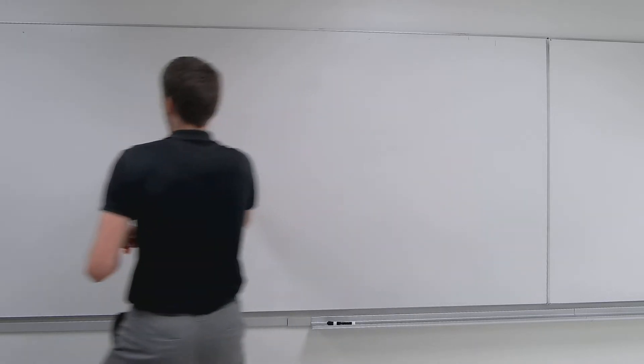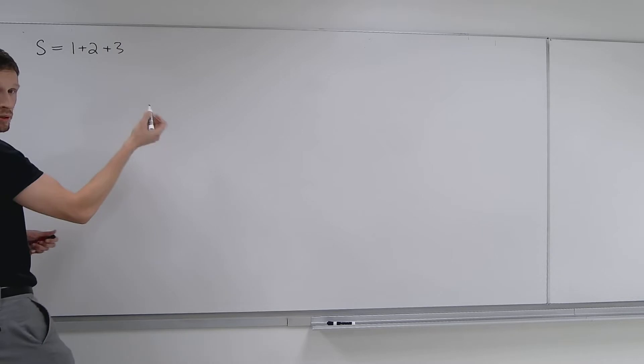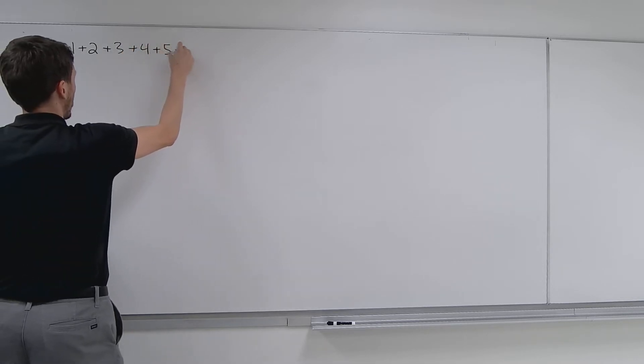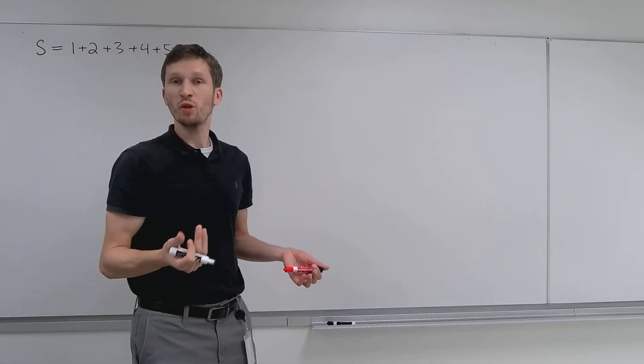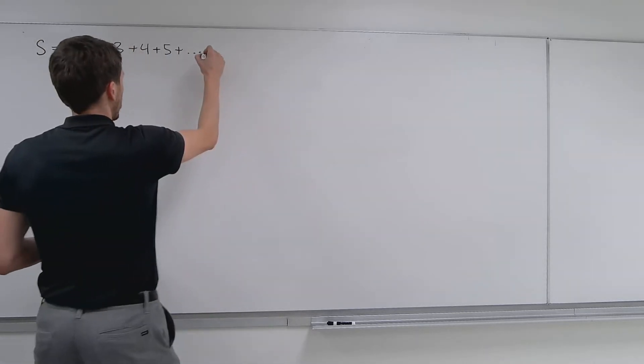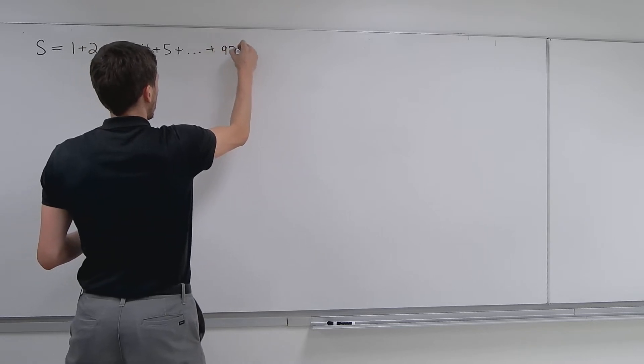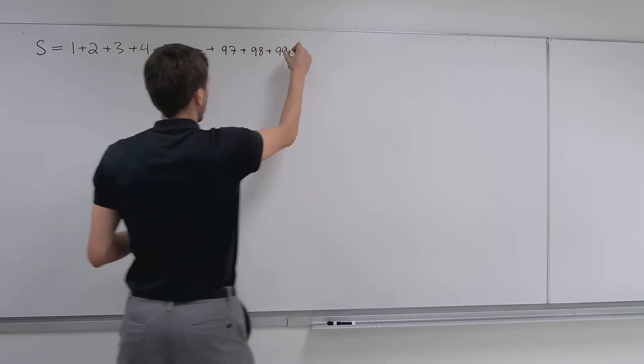In other words, how do you find the sum of 1 plus 2 plus 3 plus 4 plus 5, and I can't write that much, there's not enough time allotted, and all the way to 100. So I'll put an ellipsis here, and then I'm gonna say plus 97, plus 98, plus 99, and finally plus 100.